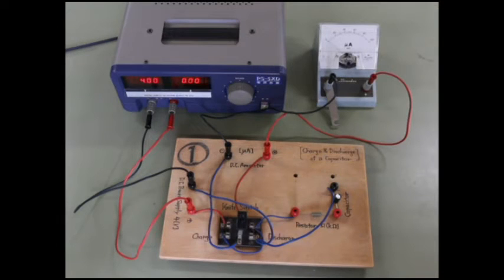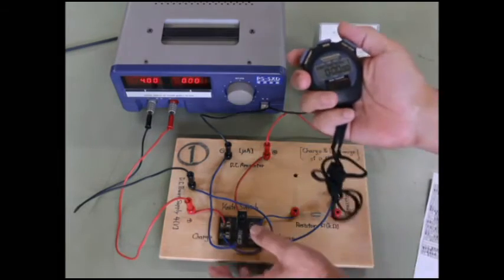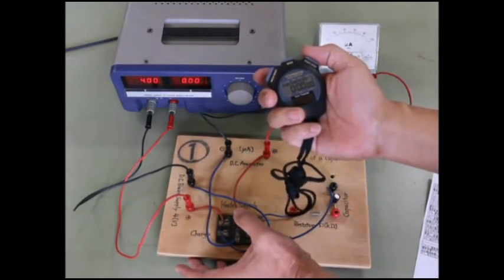First, we will measure the value of the current over time while it is charging. Turn on the switch on the charge side and start the stopwatch at the same time, like this. One, two, three.